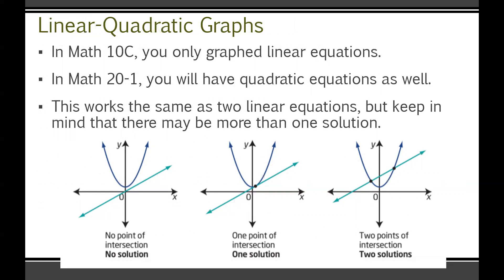Next: linear-quadratic graphs. With two linear equations, it's pretty predictable — usually one solution, or no solution if they're parallel. But when you add a quadratic into the mix, you can have a bunch of different possibilities. Sometimes the quadratic and linear don't meet at all — no solution. Other times the linear just grazes the surface of the quadratic at one location — one solution. Most commonly, the linear crosses right through the quadratic — two solutions.